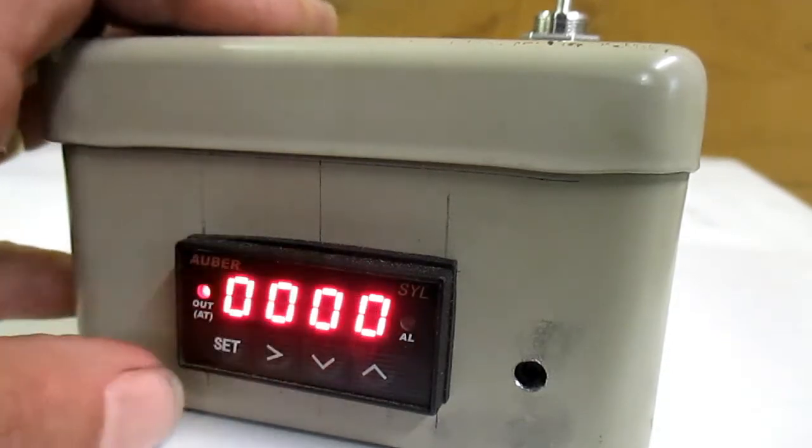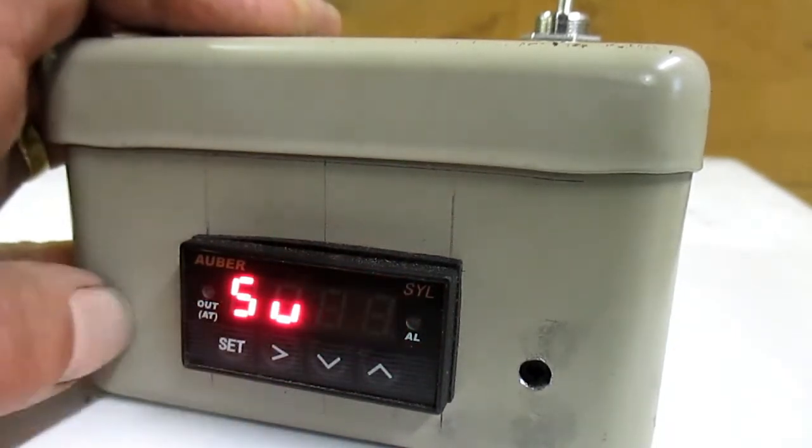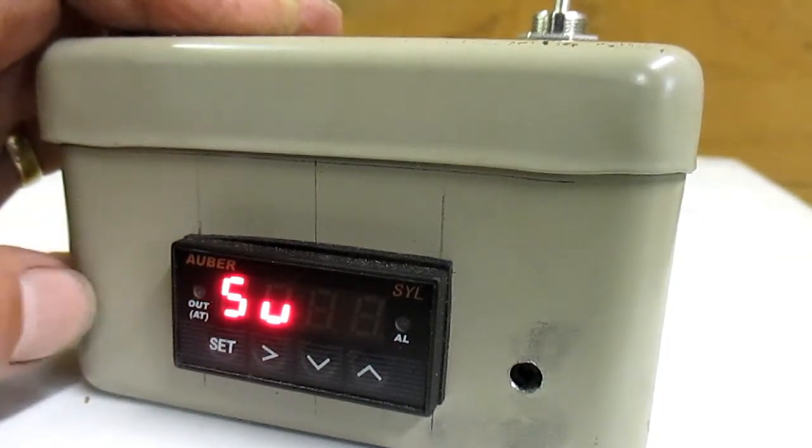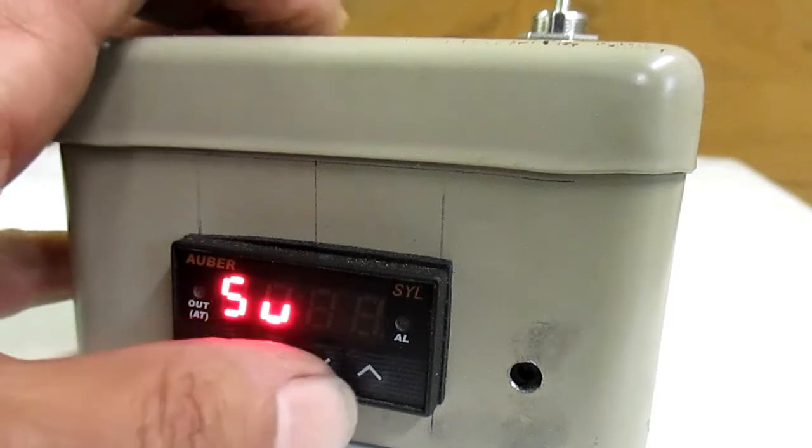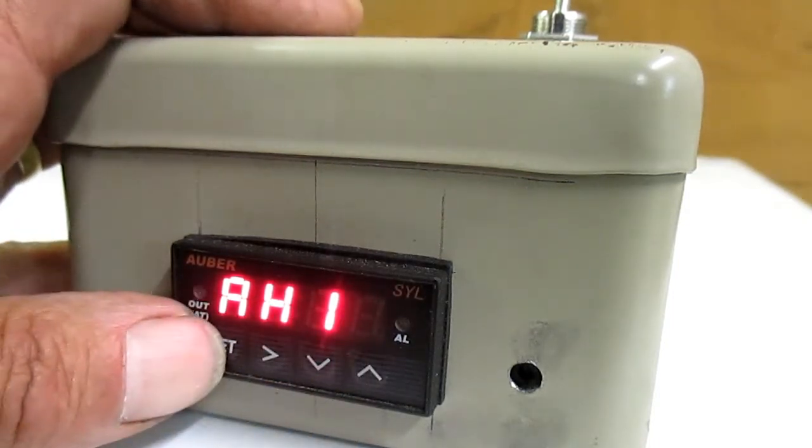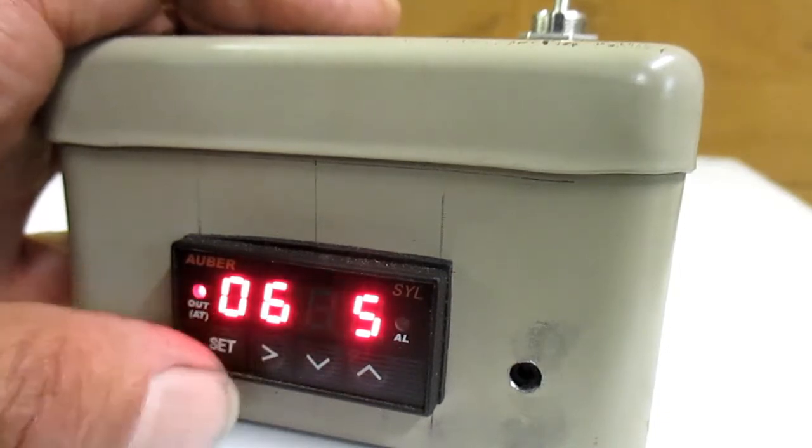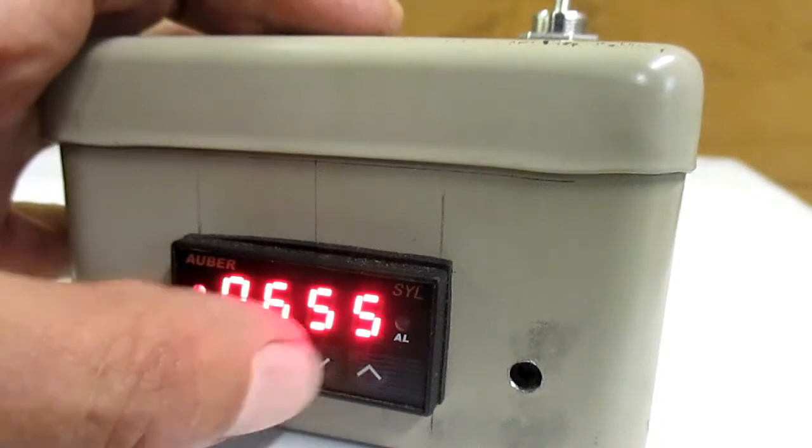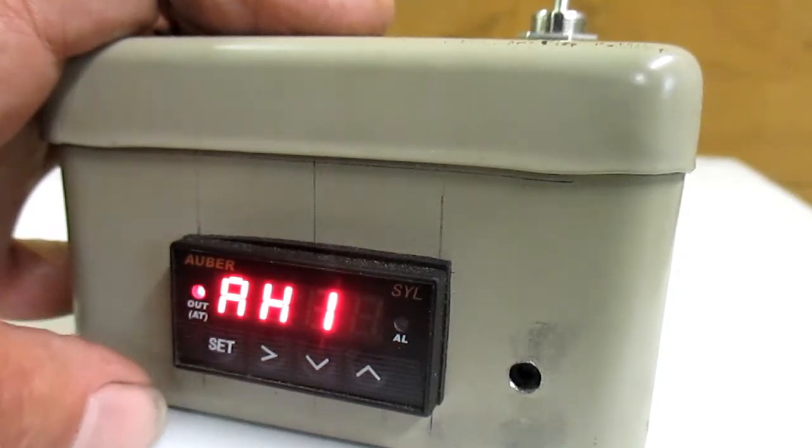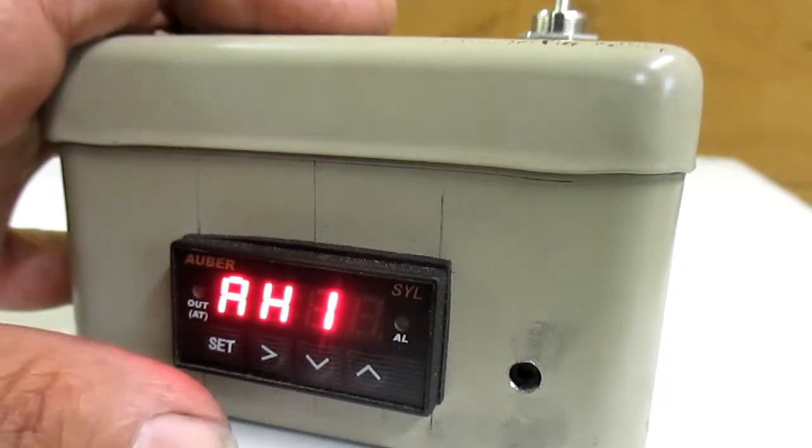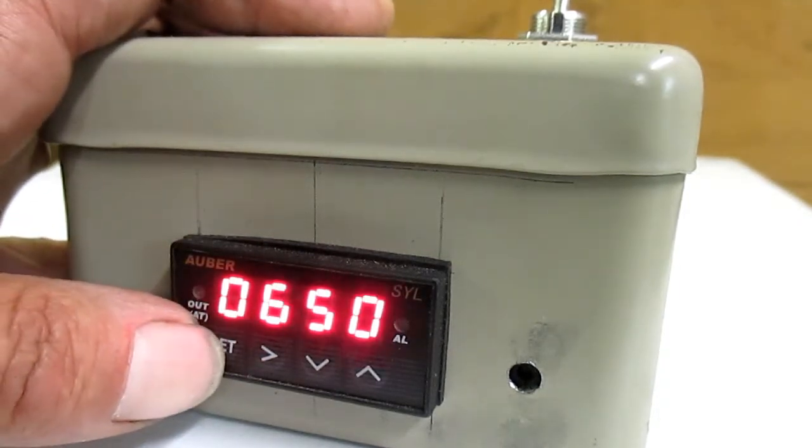First thing I do is I press the set button. I have to enter in 0001. So I go over, over, over, and up. There's the one. Then I hit set again. Now from here what I'm looking for is AH1. That stands for alarm high, and this is the first alarm because you can set two alarms for this. We'll push the up. There's the high. Then we press set.